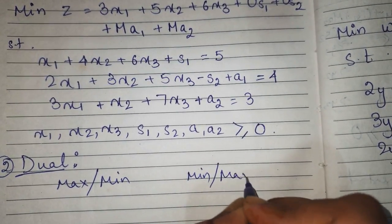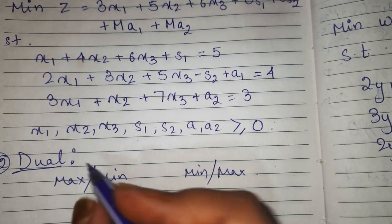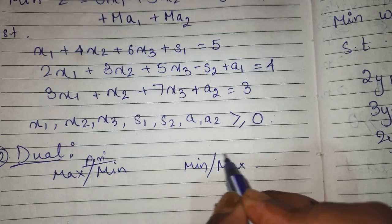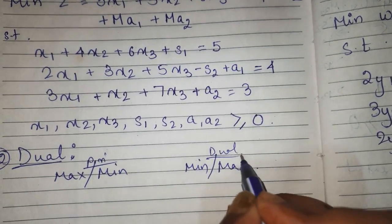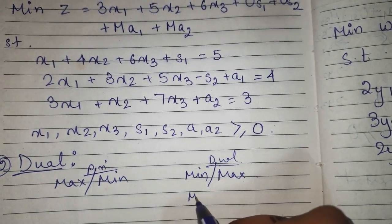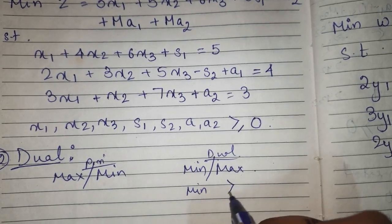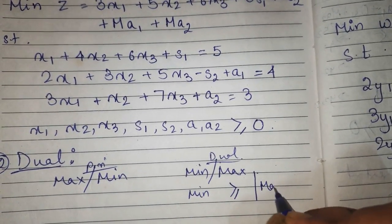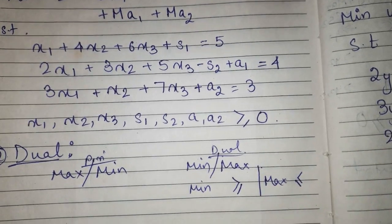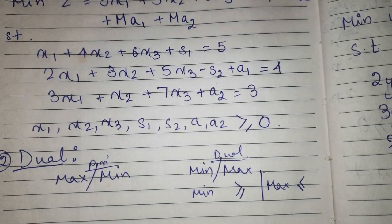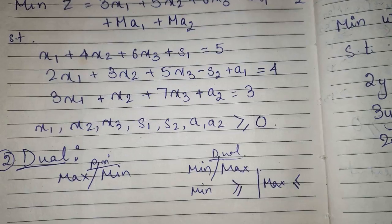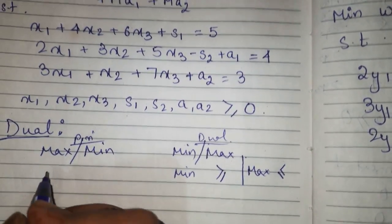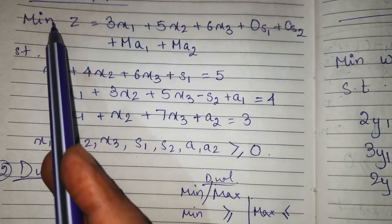If this was primal and this is dual, for dual if the function is minimization then all the conditions will be greater than or equal to. If it is maximization then all the conditions will be less than or equal to. Till now this much rules, let us start converting.